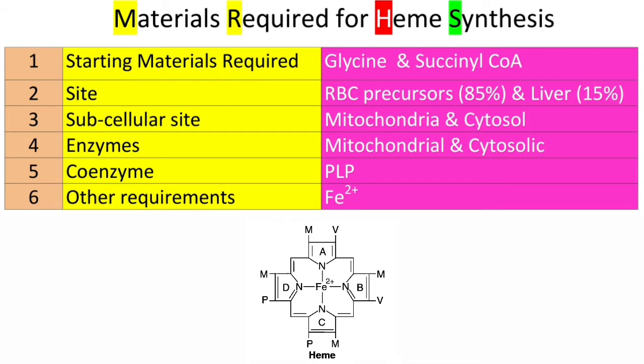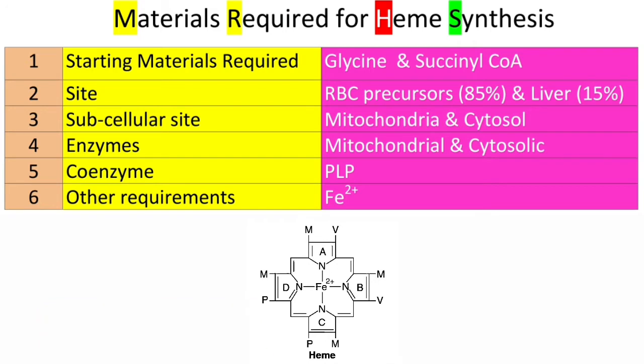There are a total of eight enzymes required for heme synthesis. The first enzyme and the last three enzymes are present in the mitochondria, and the remaining — that is, the second to fifth enzymes — are present in the cytosol. The coenzyme required for heme synthesis is PLP, pyridoxal phosphate, in the first reaction.